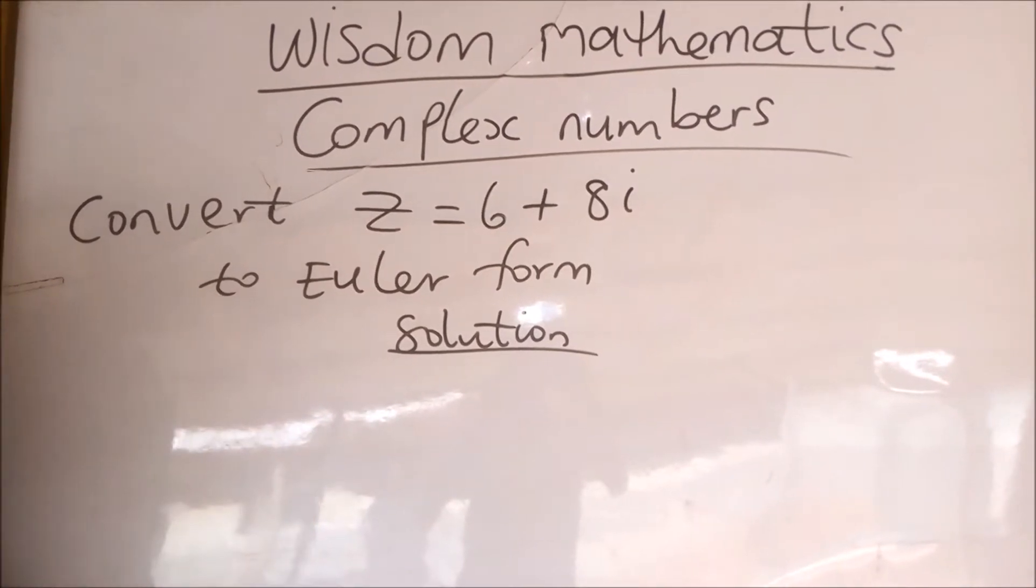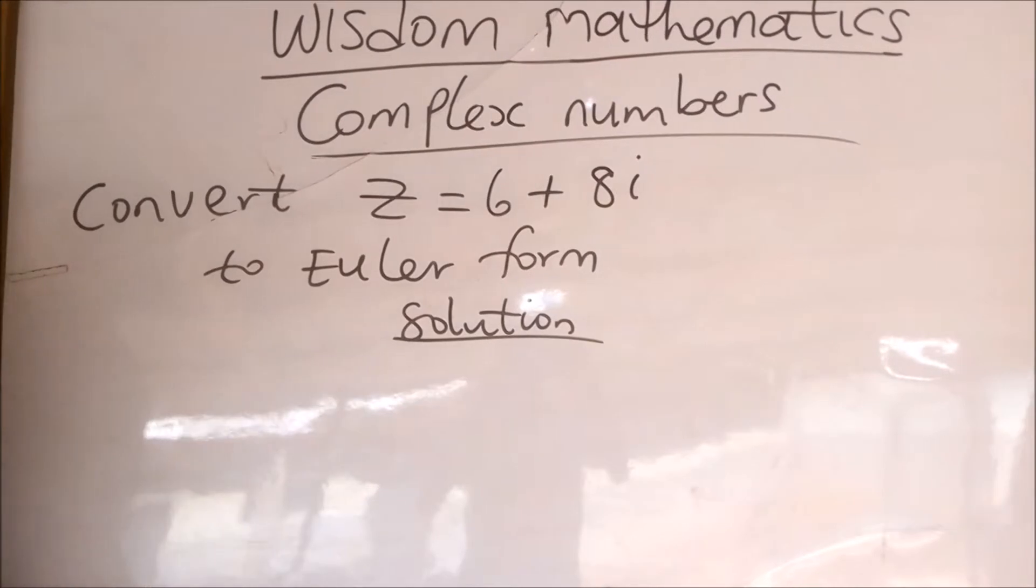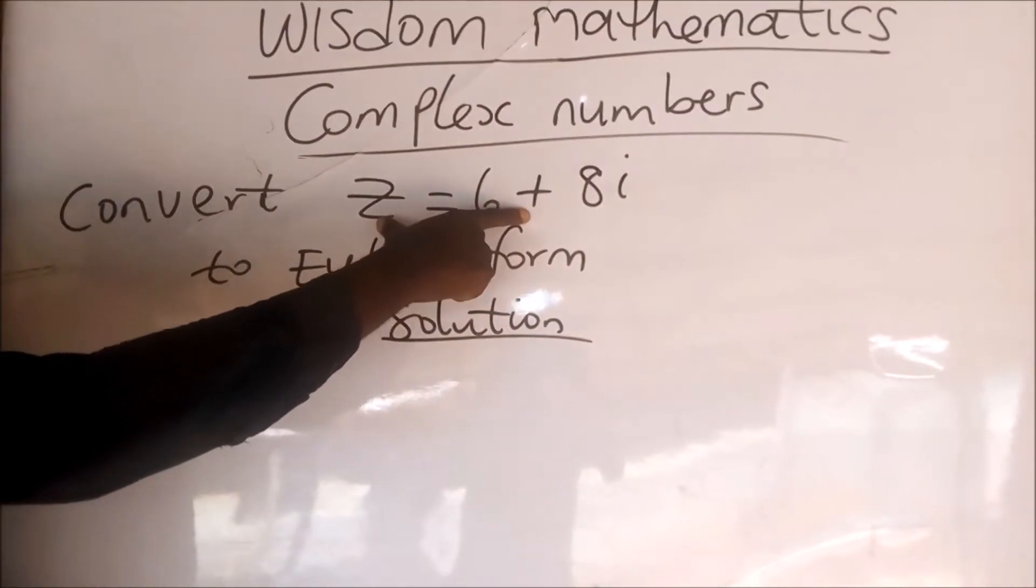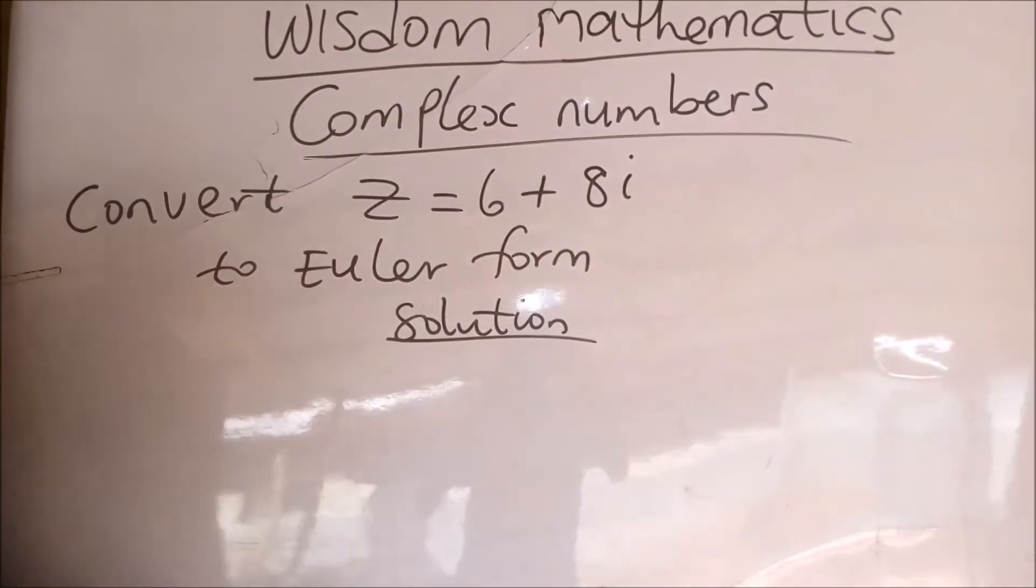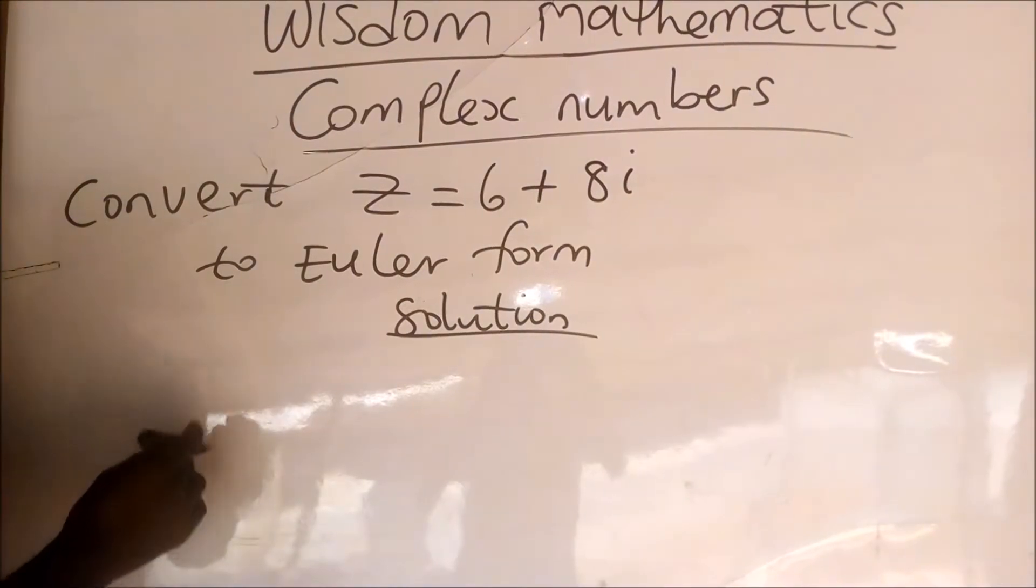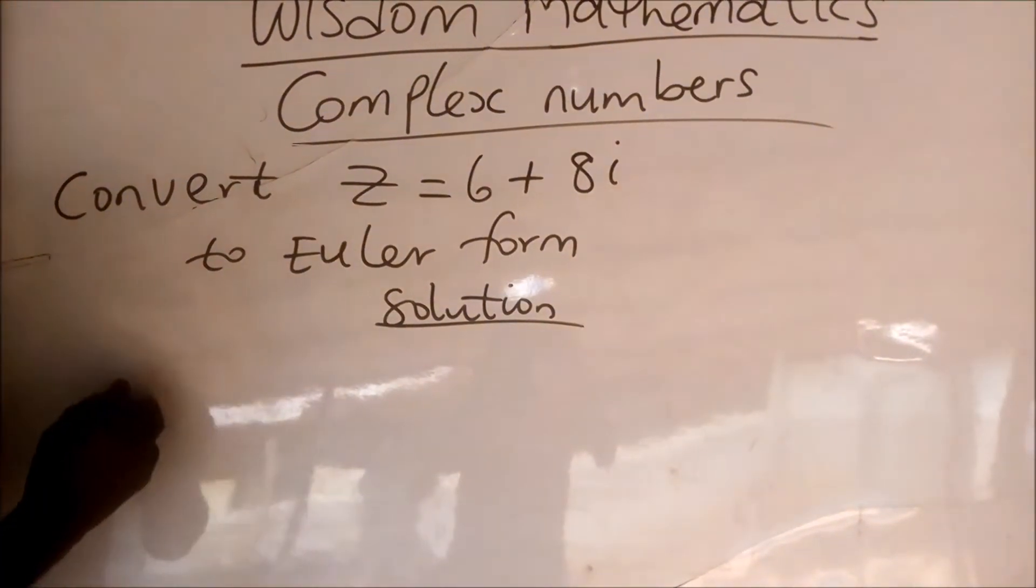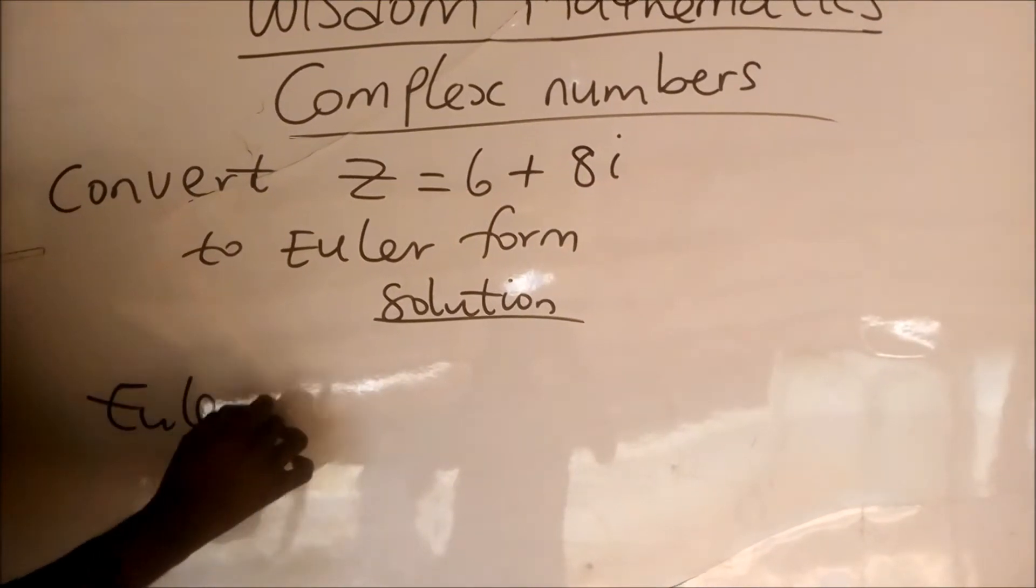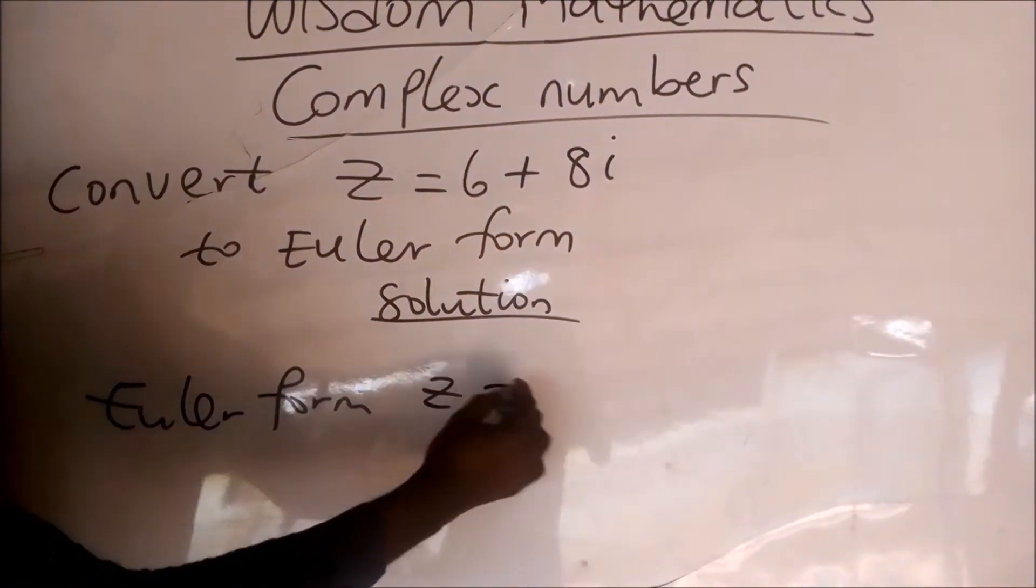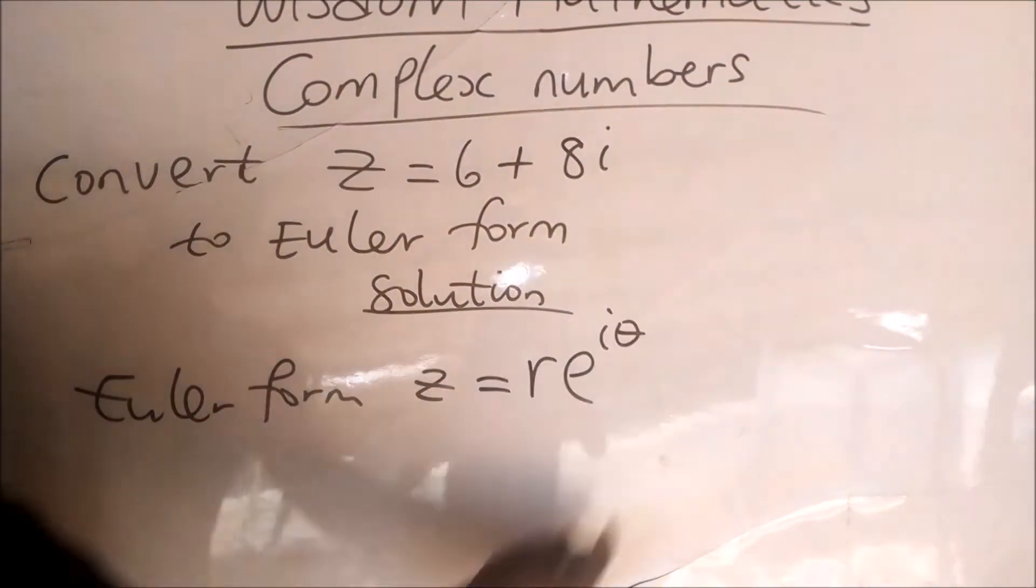Now this question is to convert this complex number in rectangular form to Euler form. For us to do that, we have to know the form of complex number known as Euler form. Euler form of complex number is given as z equal to r exponential i theta, where this r is the modulus and this theta is the argument.